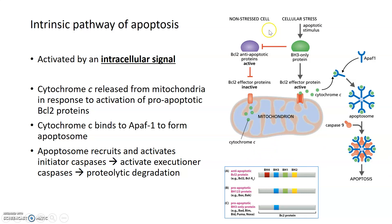To summarize: normally in a cell, anti-apoptotic proteins are active. Once cells receive an apoptotic stimulus from inside — like DNA damage — BH3-only proteins are activated, they inhibit the anti-apoptotic proteins, and promote apoptosis by allowing the release of cytochrome c from the mitochondria into the cytoplasm. There it binds to Apaf-1, forms the apoptosome, recruits initiator caspases, and triggers the caspase cascade, ultimately leading to apoptosis.